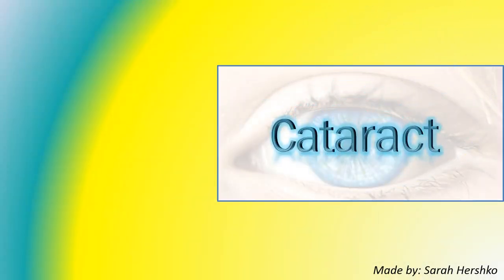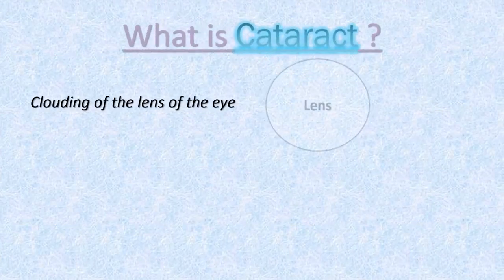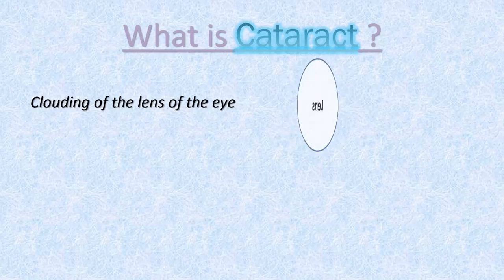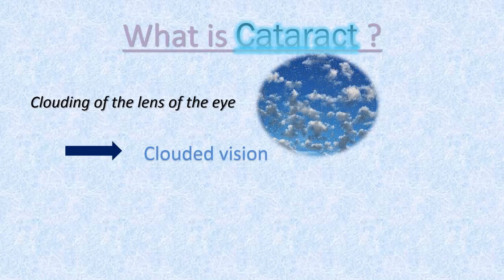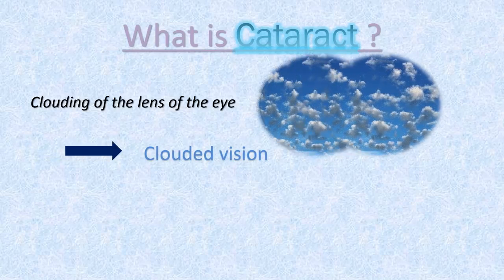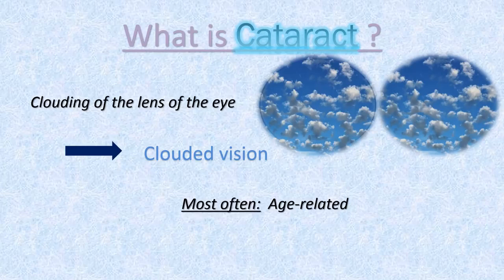Hello and welcome to this educational video about cataract. A cataract is basically a clouding of the lens of the eye, which causes clouded vision. It can occur in either one or both eyes, but it cannot spread from one eye to the other. Most cataracts are related to aging and are very common in older people.